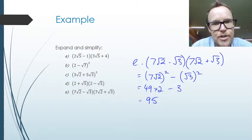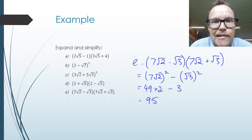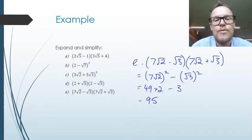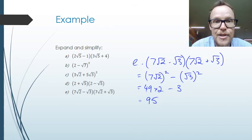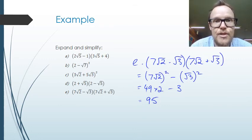Just recapping on the learning goal for this lesson: we've learnt how to do binomial expansions using surds, and we've been able to look at specific cases where we've got perfect squares and also the difference of perfect squares.